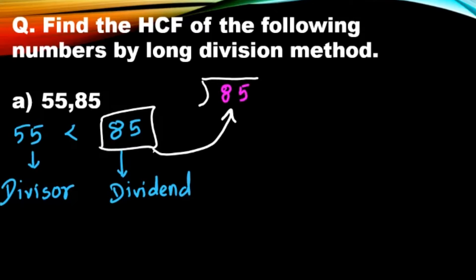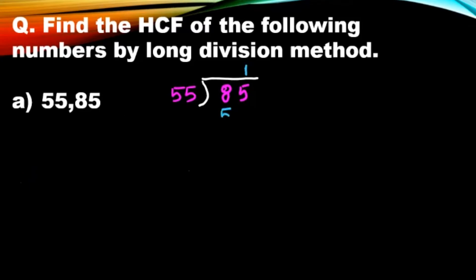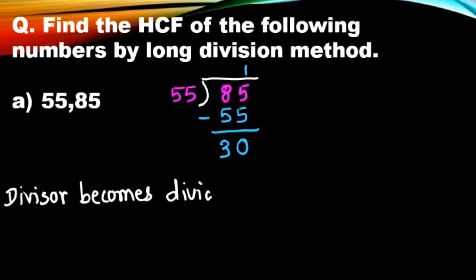So let us divide 85 by 55. 55 is the divisor here. Now, if we say the table of 55, 55 ones are 55, and here 30 is the remainder. Now children, in long division method, always divisor becomes dividend.